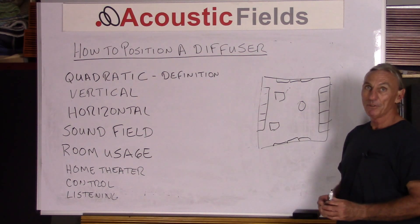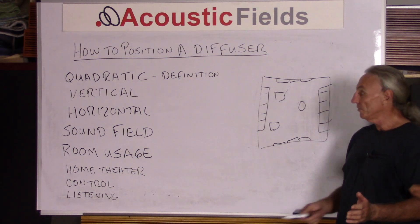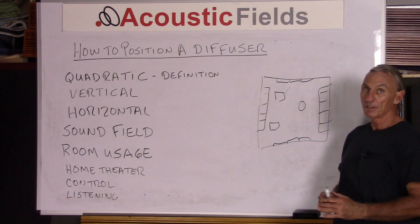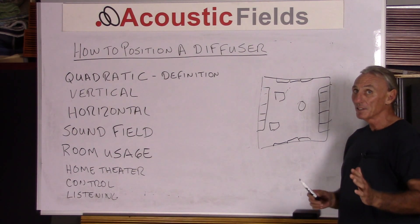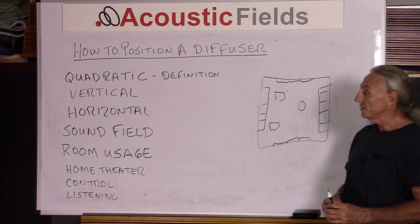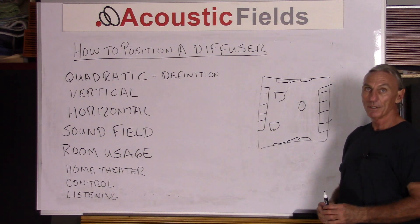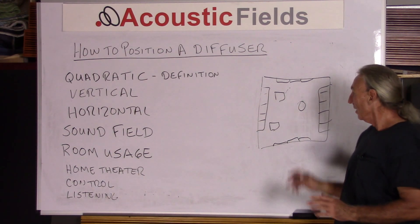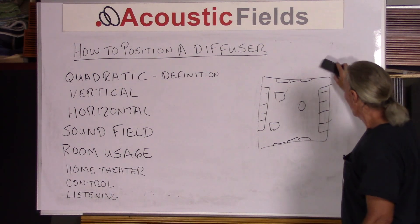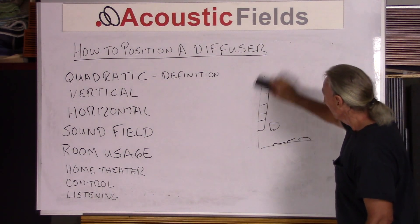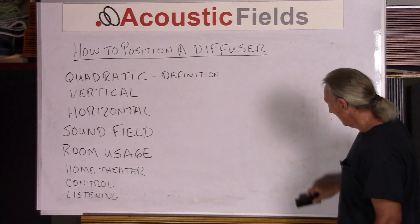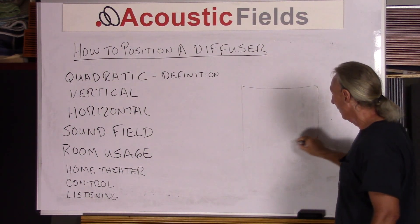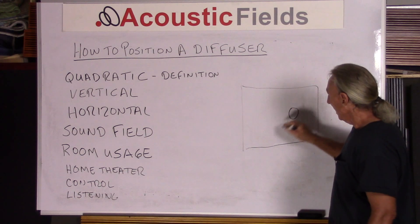So how to position a diffuser really depends on your room usage — whether it's home theater, control room, or listening room. Each has its own special applications because each sound field you're trying to create is different. Vertical and horizontal diffusion placement with quadratic is a great way to achieve it. You also have to keep in mind the diffuser-to-speaker distance, and there's some confusion around that as well.